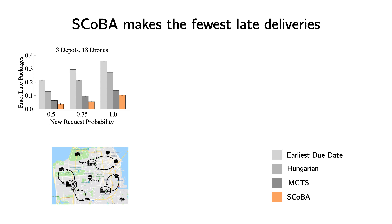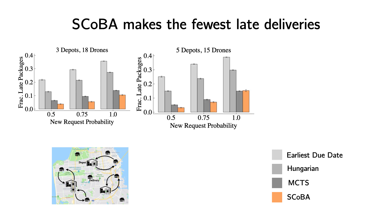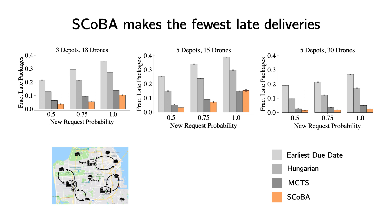On the multi-drone delivery domain, where our metric is the fraction of late package deliveries, we find that SCOBA mostly outperforms all applicable baselines, once again with varying system parameters. However, its performance gap over the MCTS baseline is reduced, as this baseline is tailored for vehicle dispatch problems. The paper has additional results on computation time and competitive performance against an oracle with lookahead.